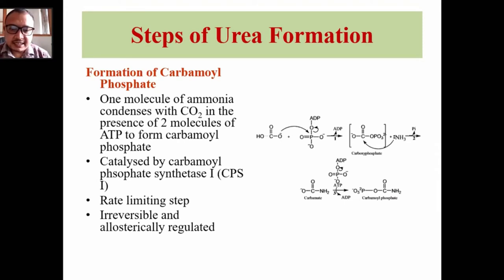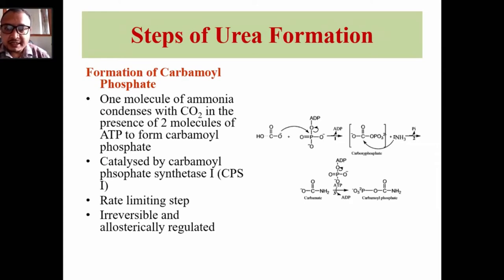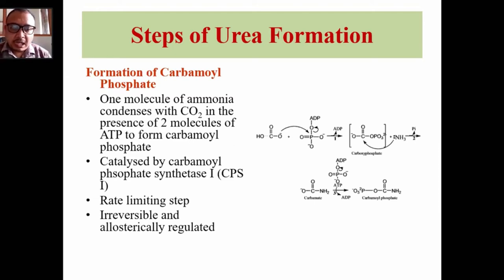CPS1 is the rate-limiting enzyme of the urea cycle, regulating urea synthesis. It is allosterically activated by N-acetylglutamate (NAG). When glutamate concentrations are high, it promotes ammonia production via glutamate dehydrogenase, and also stimulates synthesis of N-acetylglutamate, the allosteric activator of CPS1, thereby regulating urea synthesis.